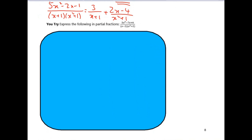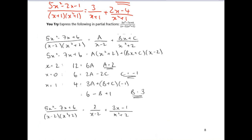Pause the video and try this one yourself. I'll reveal the answer so you can check. For this one, substituting three values in — or equating the x squared coefficients — you should get a is two, c is minus one, and b is three.